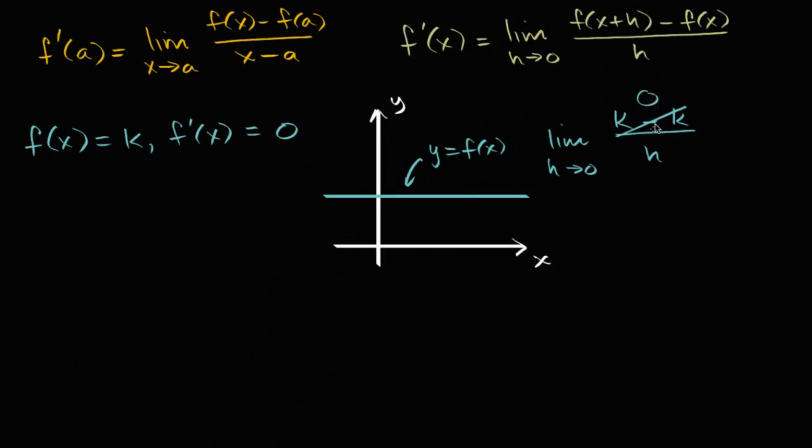Well, this is just going to be zero over h. So this limit is just going to be equal to zero. So f prime of x, for any x, the derivative is zero. And you see that here, that the slope of the tangent line for any x is equal to zero.